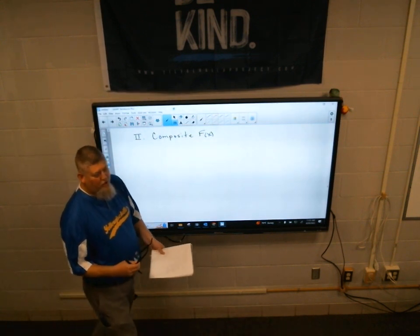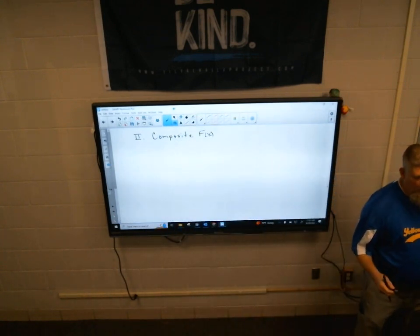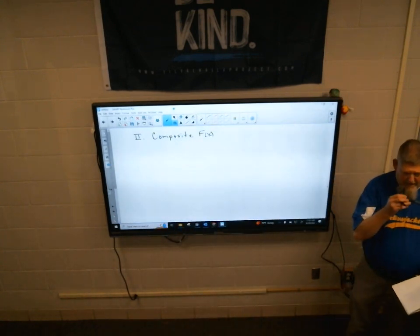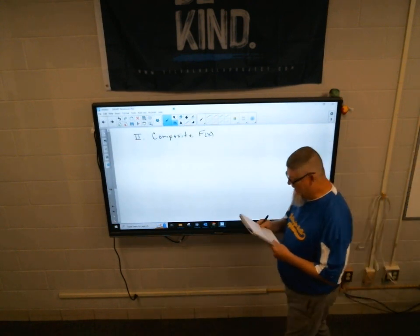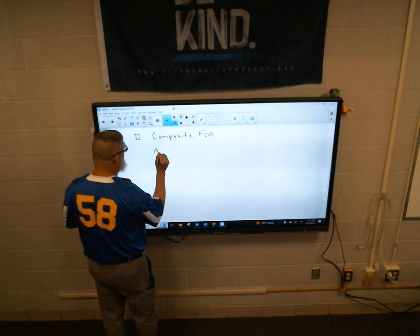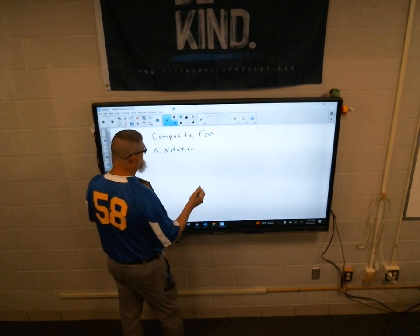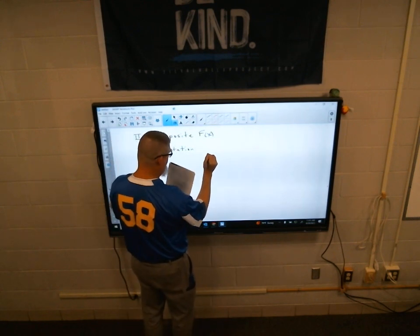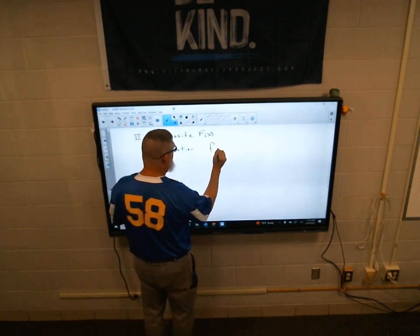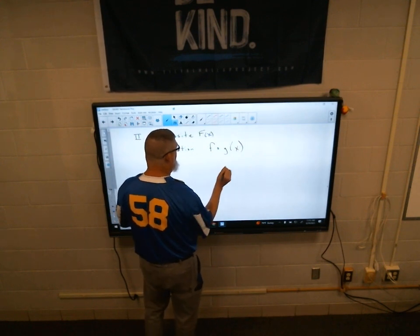So composite means to compose. We're going to compose, or we're going to create—I think someone said create—or we're going to come up with our own new functions. So, compose. So, the notation looks like this. Notation is going to look something like f of g of x.